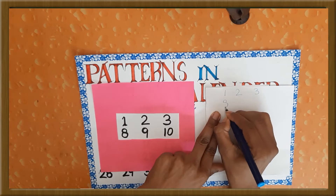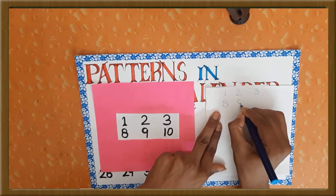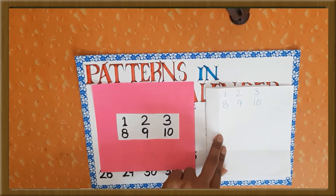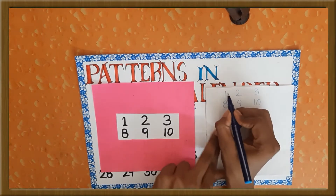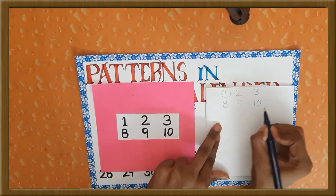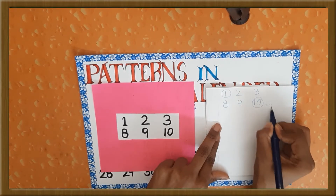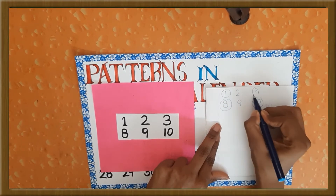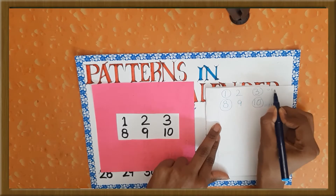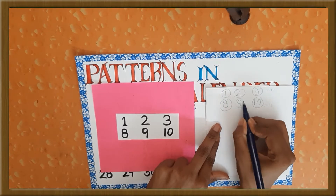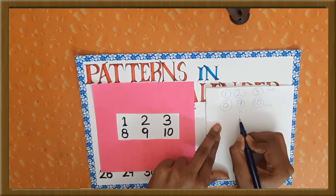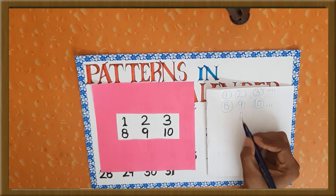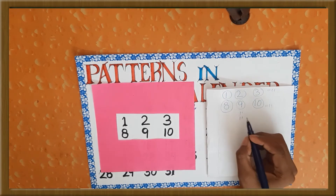...8, 9, 10. Now 1 plus 10 is 11. 8 plus 3 is also 11. And 2 plus 9 is also 11. So this was easy, isn't it!